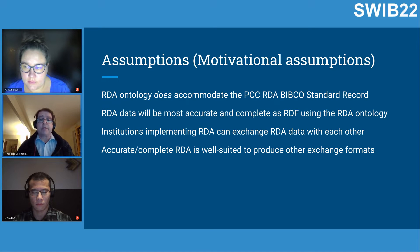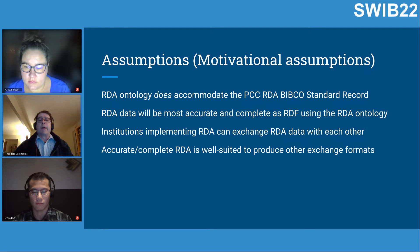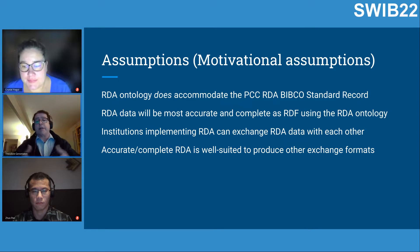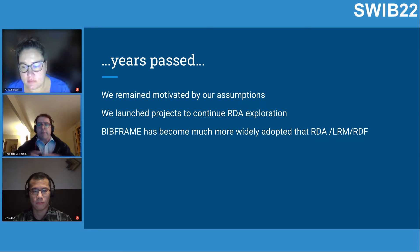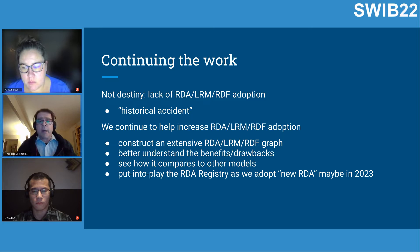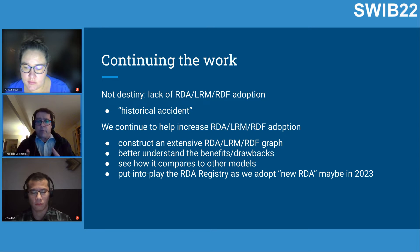We did an actual ontology-to-ontology alignment in 2020 and reaffirmed these findings. Our motivational assumptions included: the RDA ontology accommodates the PCC RDA BIBCO Standard Record; RDA data will be most accurate as RDF using the RDA ontology; and institutions implementing RDA can exchange data with each other. Years passed, and BIBFRAME became much more widely adopted than RDA — more a historical accident than destiny.